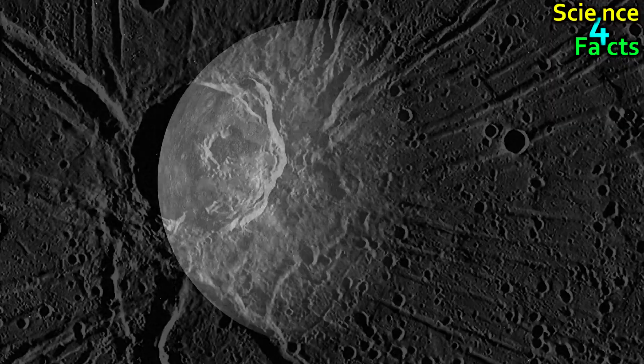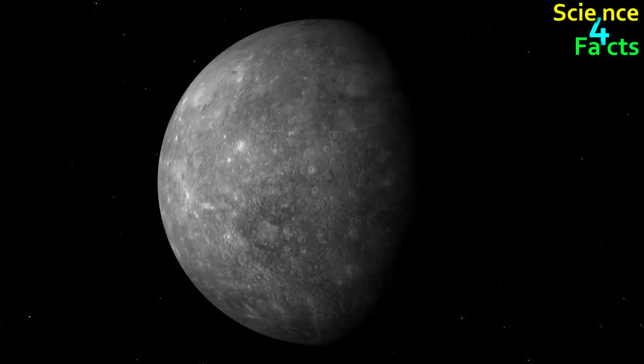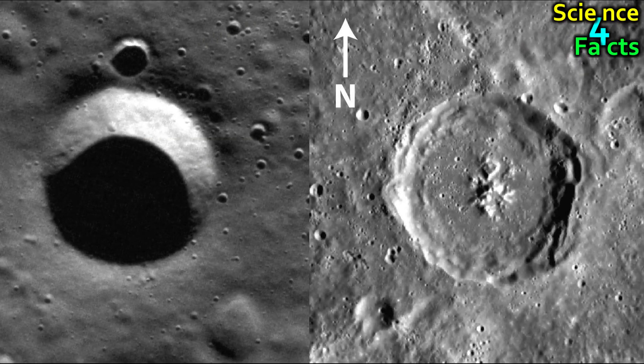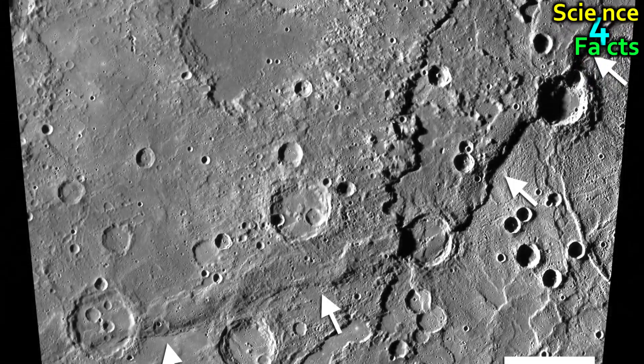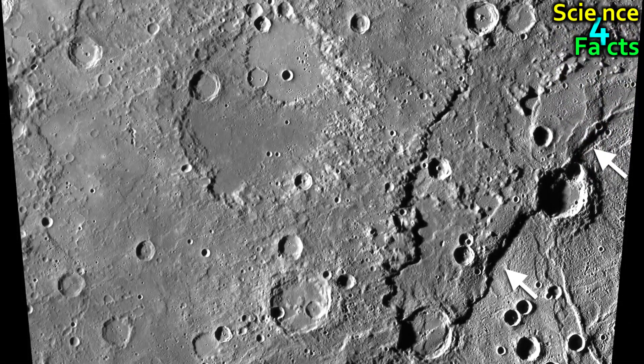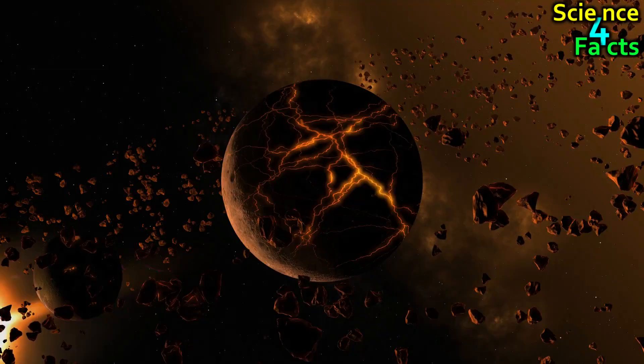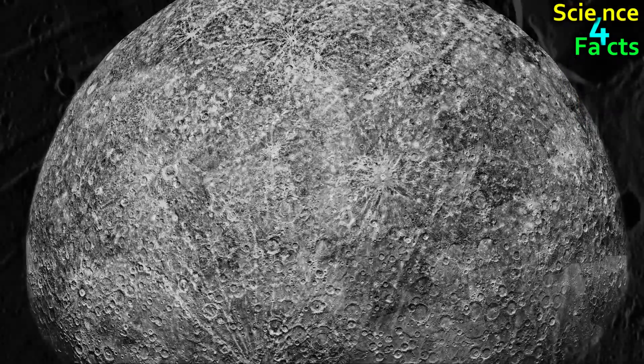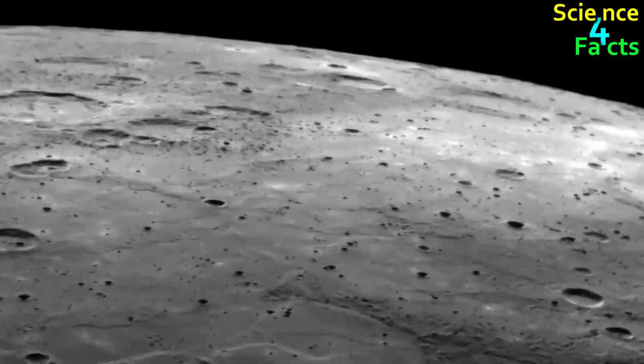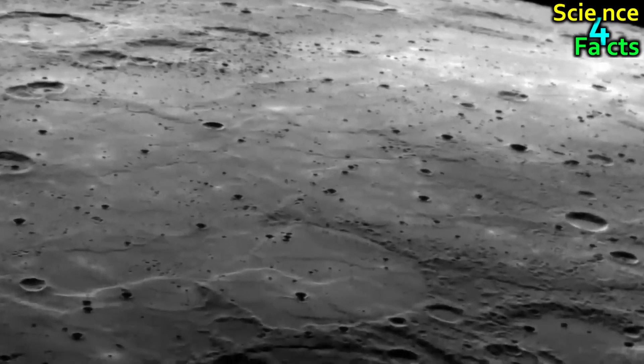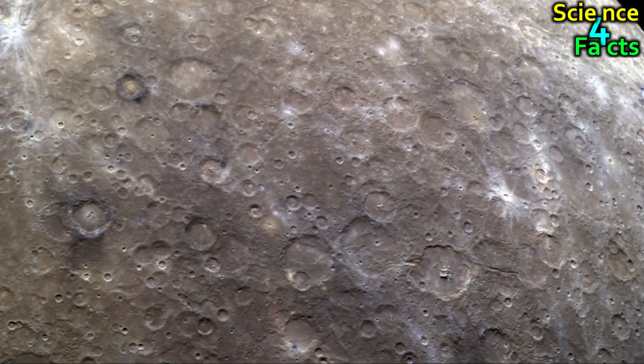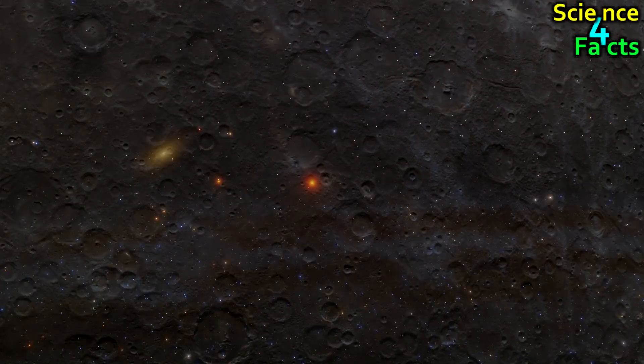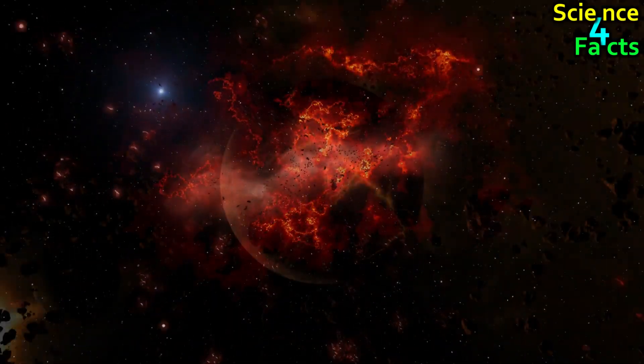In addition to impact craters, Mercury's surface is also covered in dust and rocky debris. There are also several steep cliffs and crater rims that can reach up to a mile high, such as the cliff known as Enterprise Rupes. These cliffs are thought to have been formed as the planet's crust contracted and buckled due to cooling. Overall, Mercury's surface is a rugged and inhospitable environment, with extreme temperature fluctuations and a high degree of geological activity. However, it is also a fascinating planet to study, as it provides insight into the early history of our solar system and the processes that shape planetary surfaces.